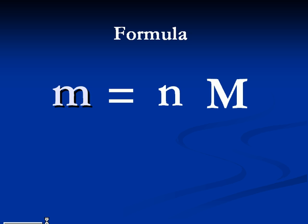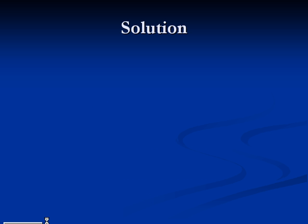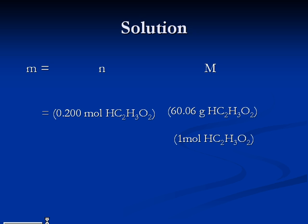In this equation, lowercase m is the mass, n is the number of moles, and capital M is the molar mass. If we want 0.200 moles of acetic acid, we simply multiply 0.200 moles by the molar mass, which is 60.06 grams per mole.